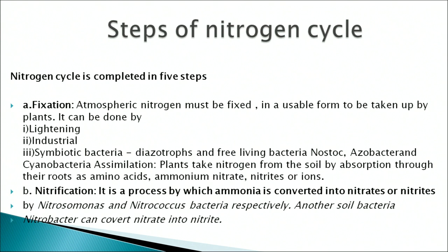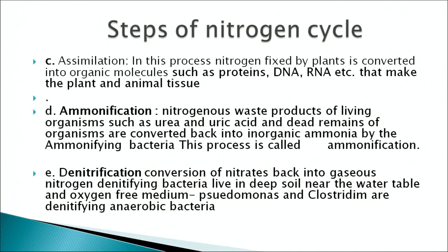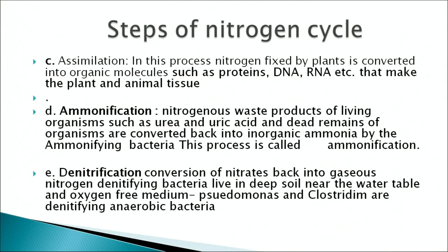The second step is nitrification, the process by which ammonia is converted into nitrites and nitrates by a large number of bacteria. The third step is assimilation, in which nitrogen fixed by plants is converted into organic molecules such as proteins, DNA, and RNA that make up plant or animal tissue. The fourth step is ammonification — nitrogenous waste products such as urea and uric acid and dead remains are converted back into inorganic ammonia by ammonifying bacteria. The fifth step is denitrification — the conversion of nitrates back into gaseous nitrogen by denitrifying bacteria such as Pseudomonas and Clostridium, which live deep in the soil in an oxygen-free medium.